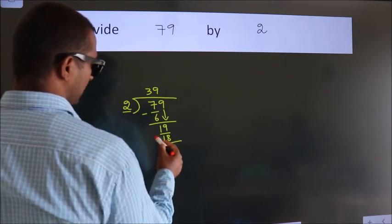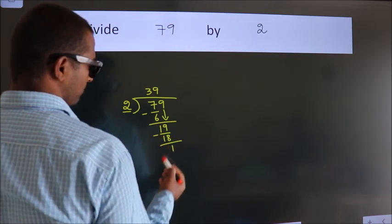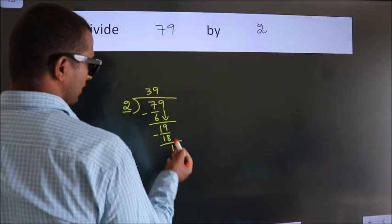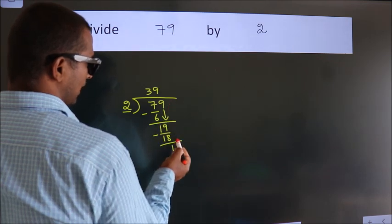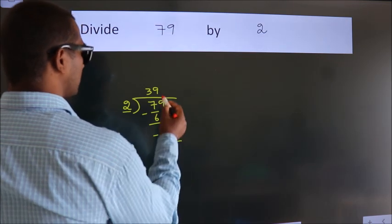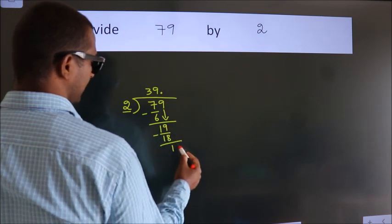Now we subtract. We get 1. After this, no more numbers to bring down. So what we do is, we put a dot, take 0.